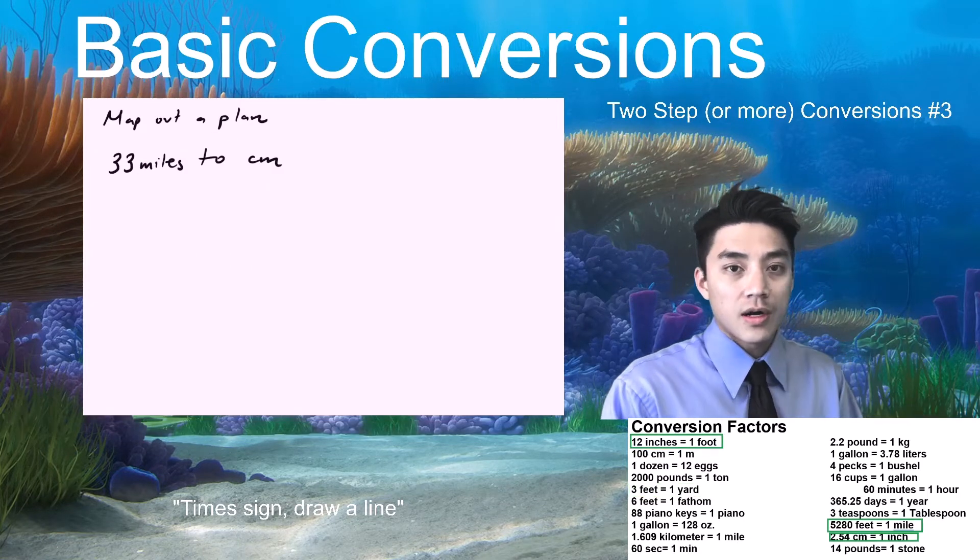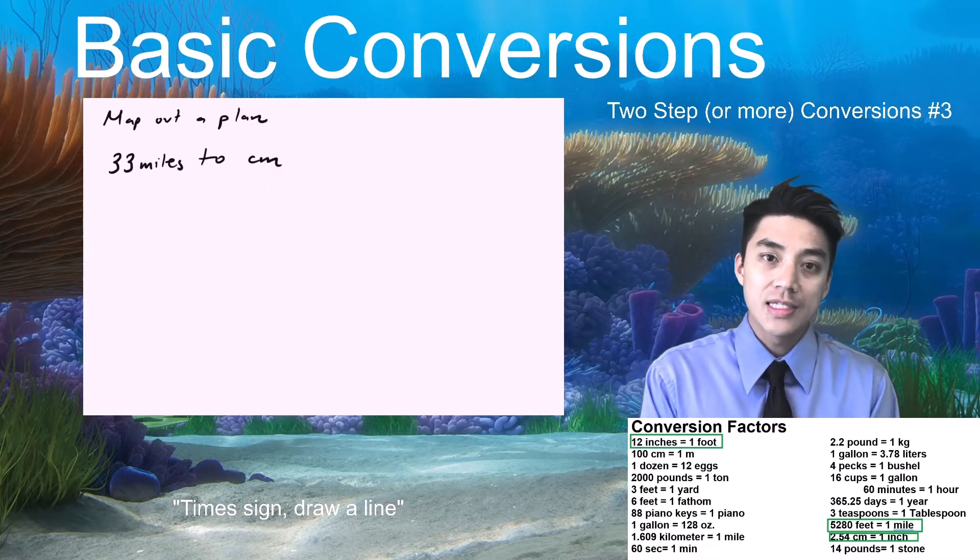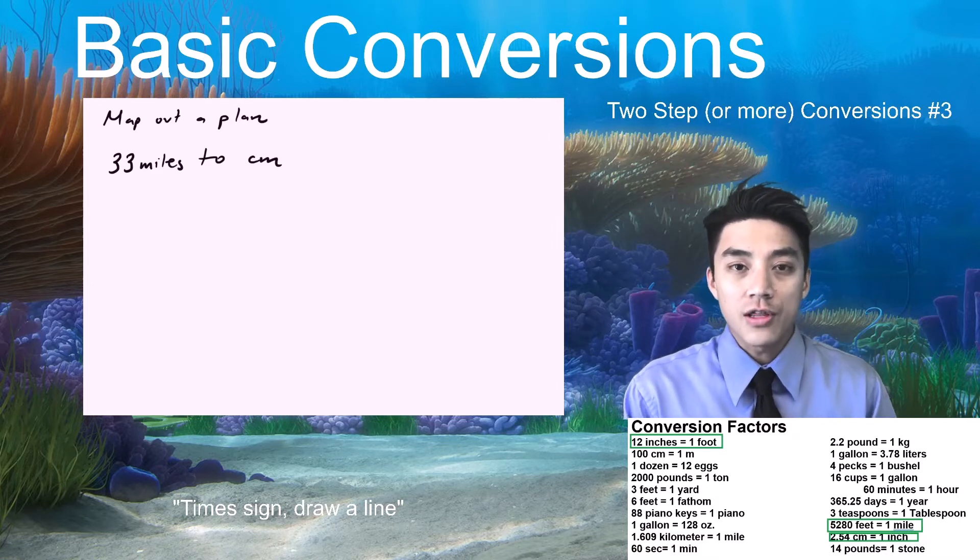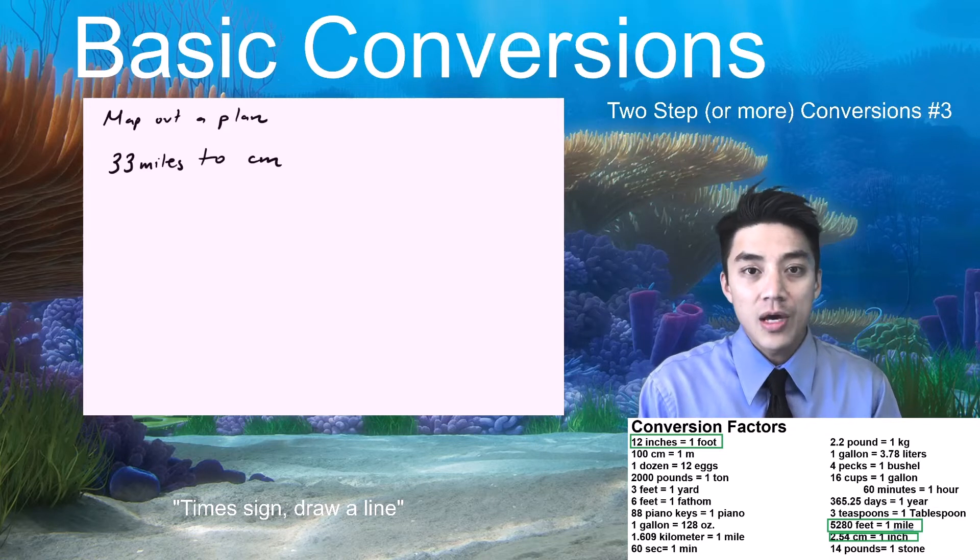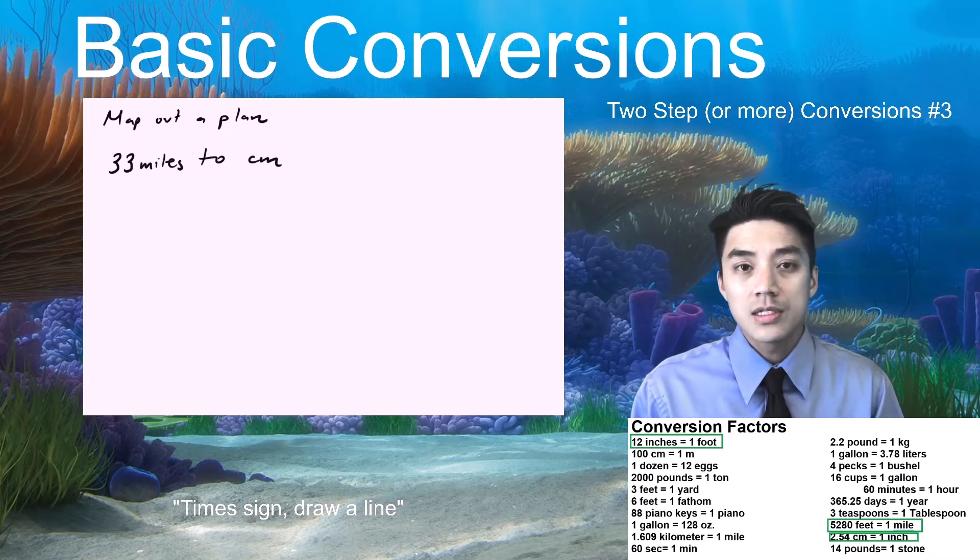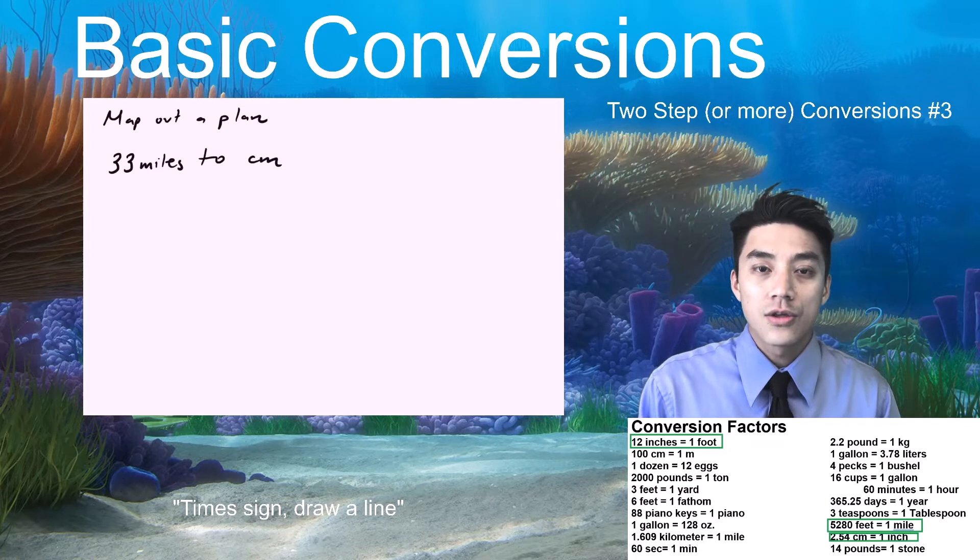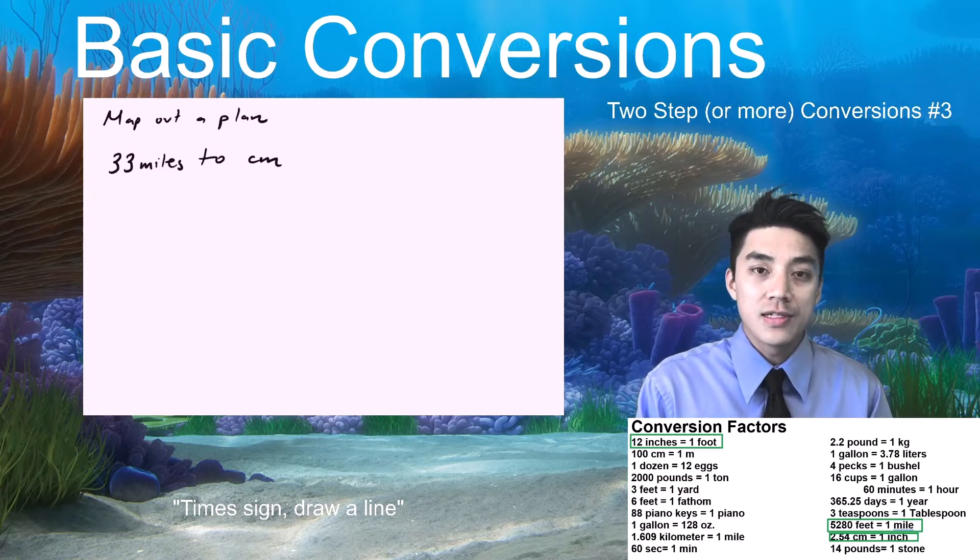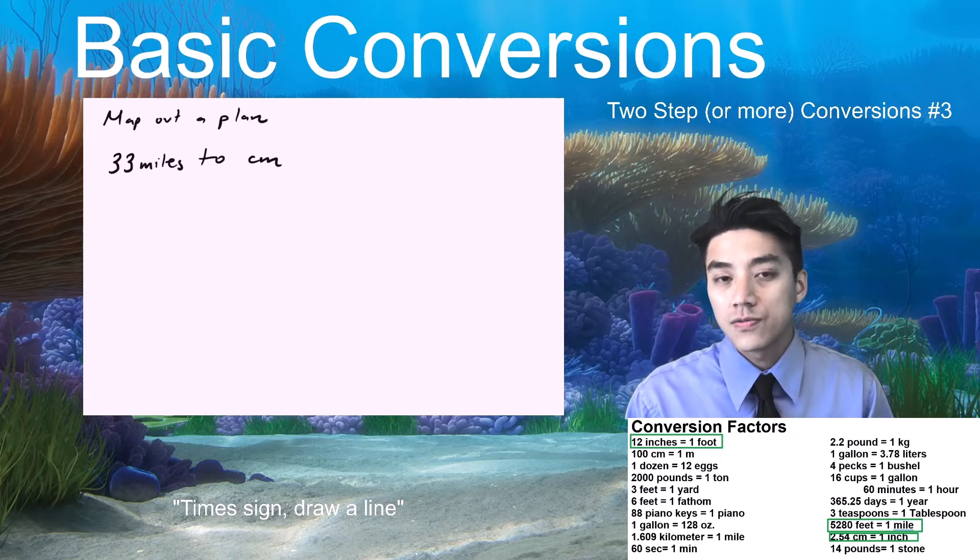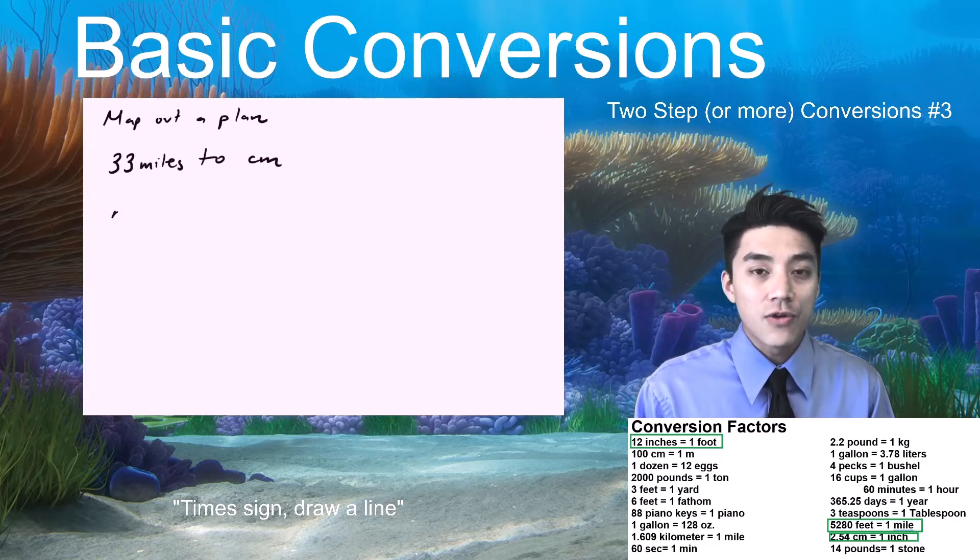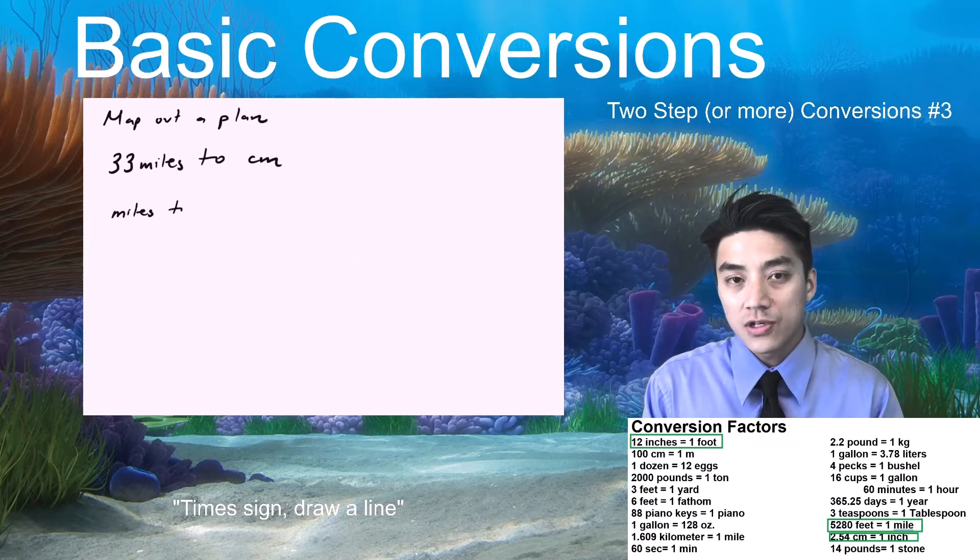Let's look at the problem where it's 2 or more steps. This is number 3, converting 33 miles to centimeters. Okay, and let's first map out a plan. Let's understand the units. Okay, miles is like a huge unit. 33 miles is roughly the distance from Santa Clemente to a city like Irvine. Okay, that's roughly 33 miles. And you're converting to a really small unit, like centimeters.